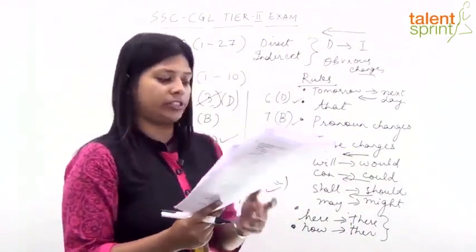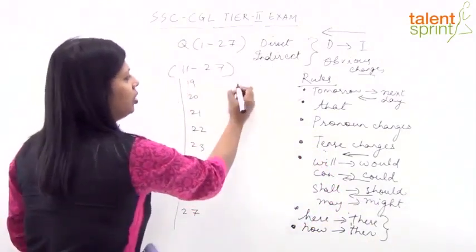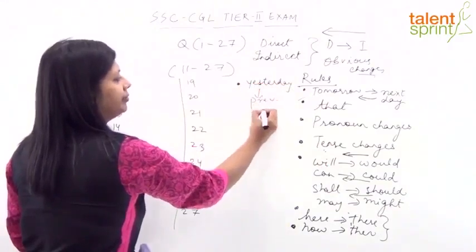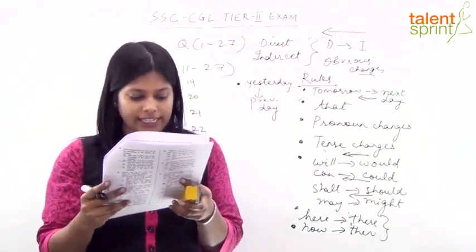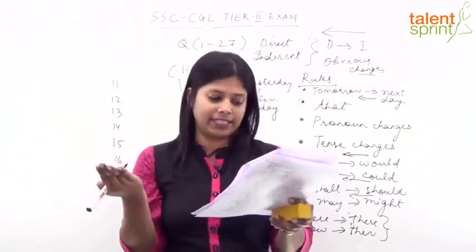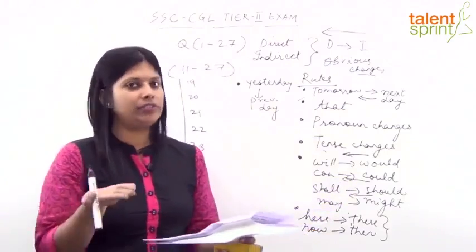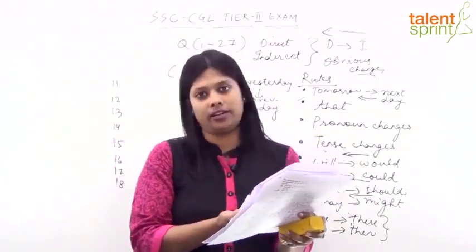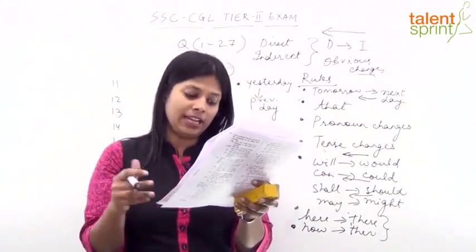Question 11: He said, 'I have done my job.' Present perfect tense changes to past perfect tense. 'I' changes to 'he,' 'have' changes to 'had,' and 'my' changes to 'his.' He said that he had done his job. The participle form 'done' remains. So question 11 answer is C.